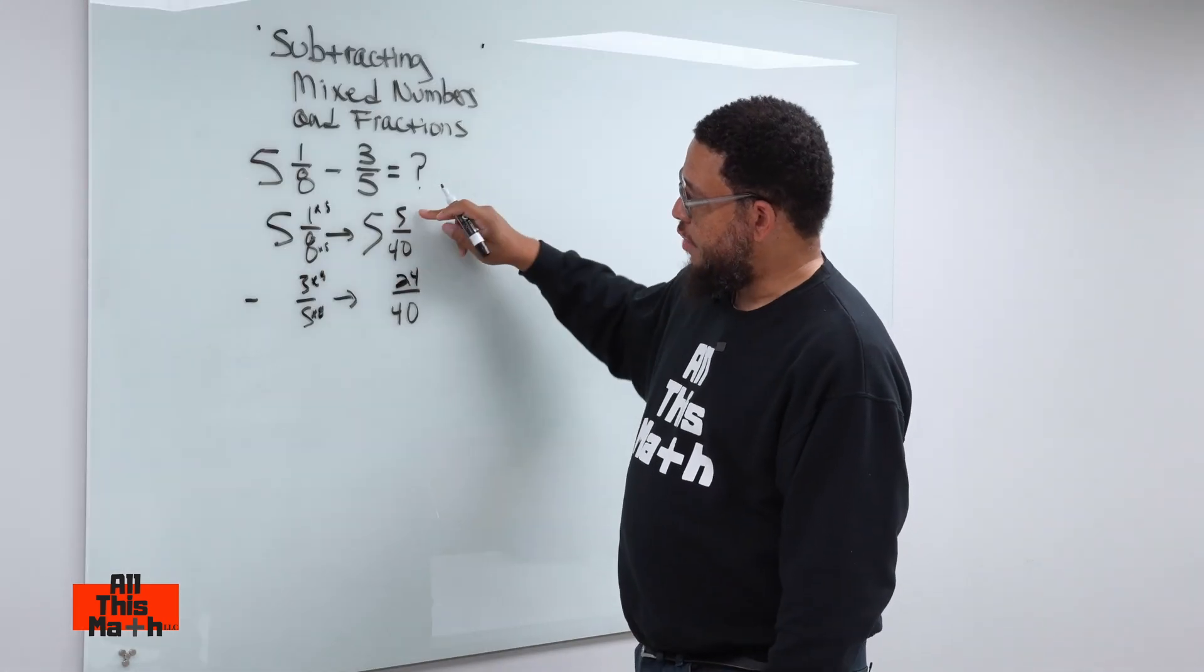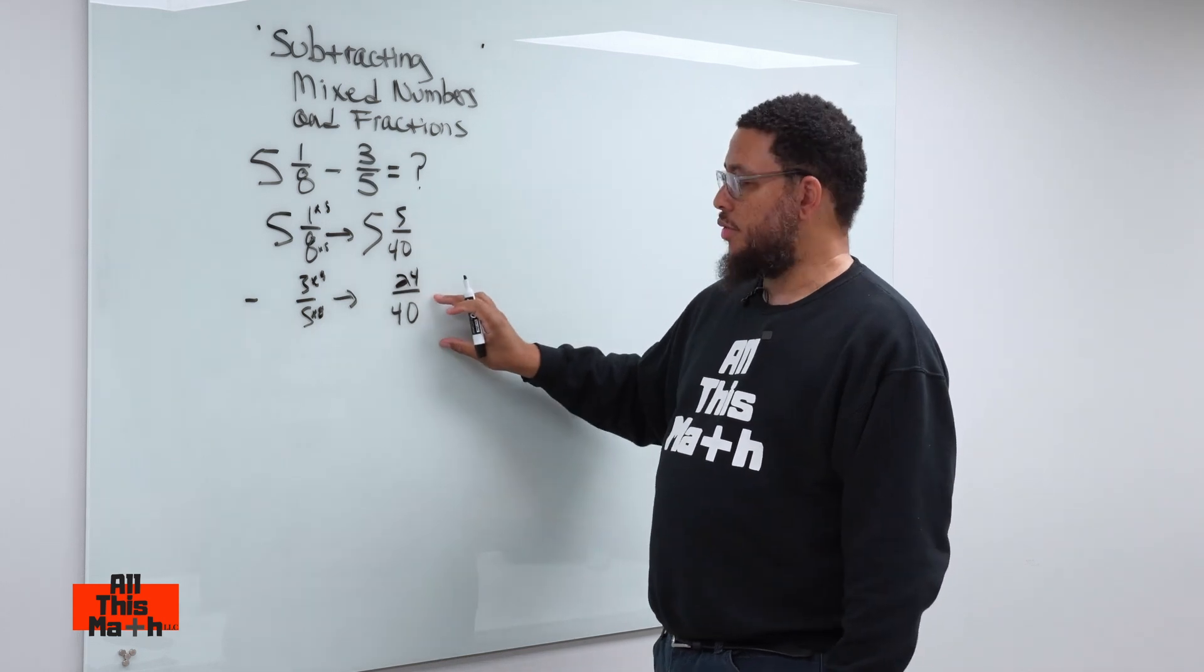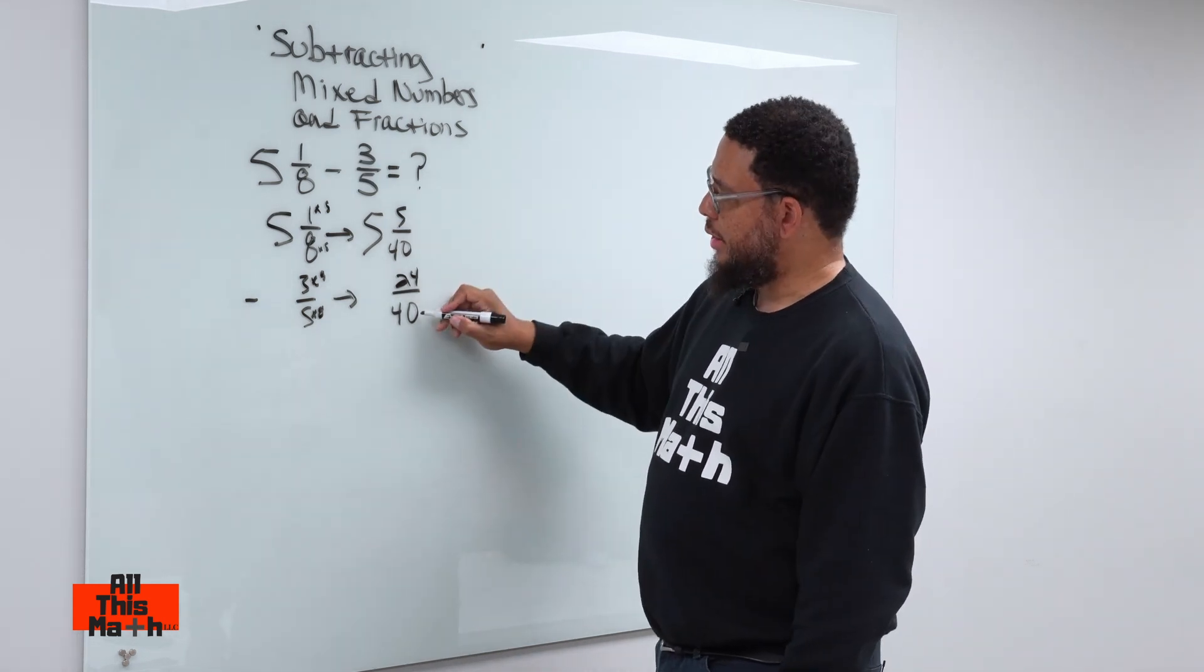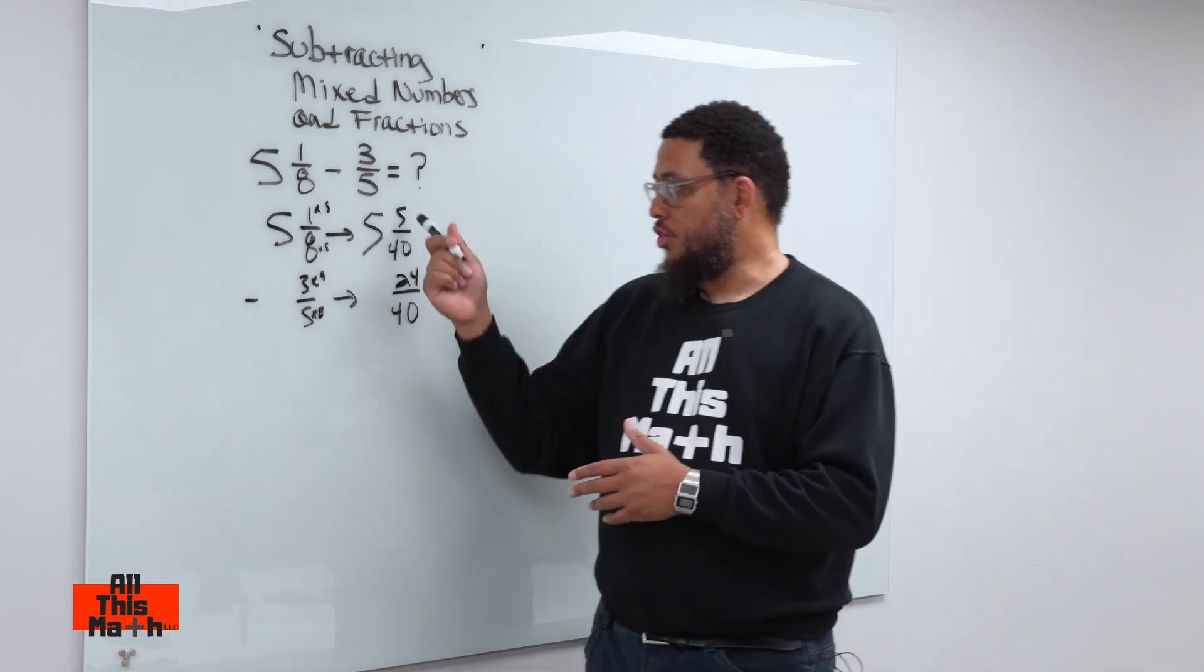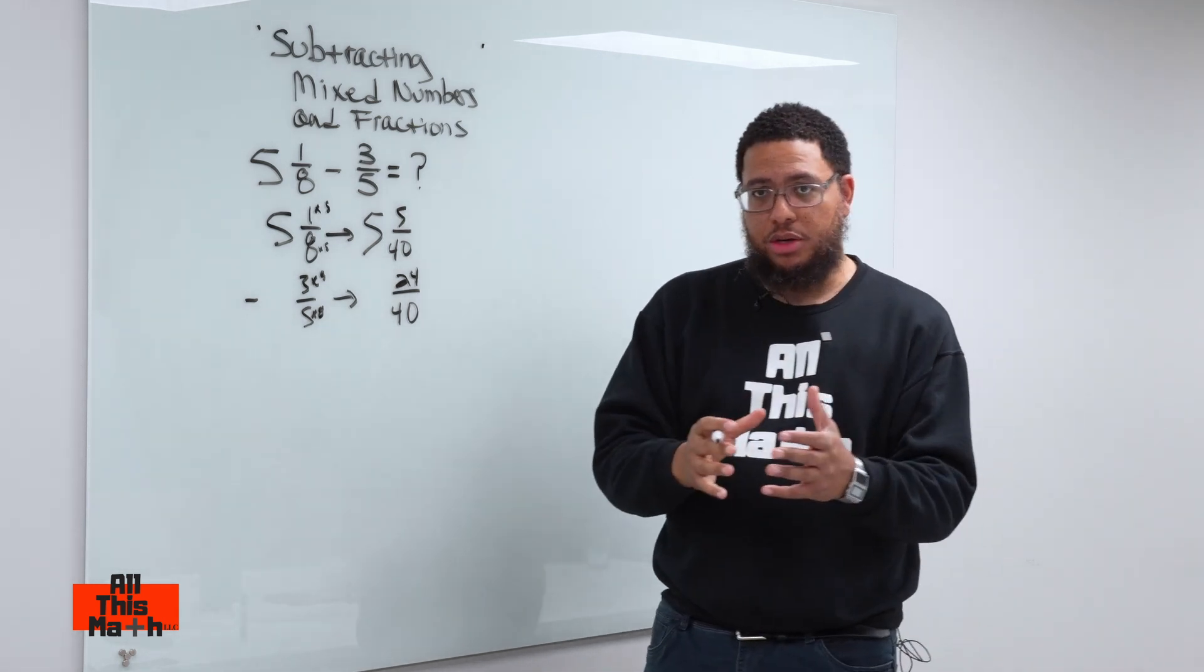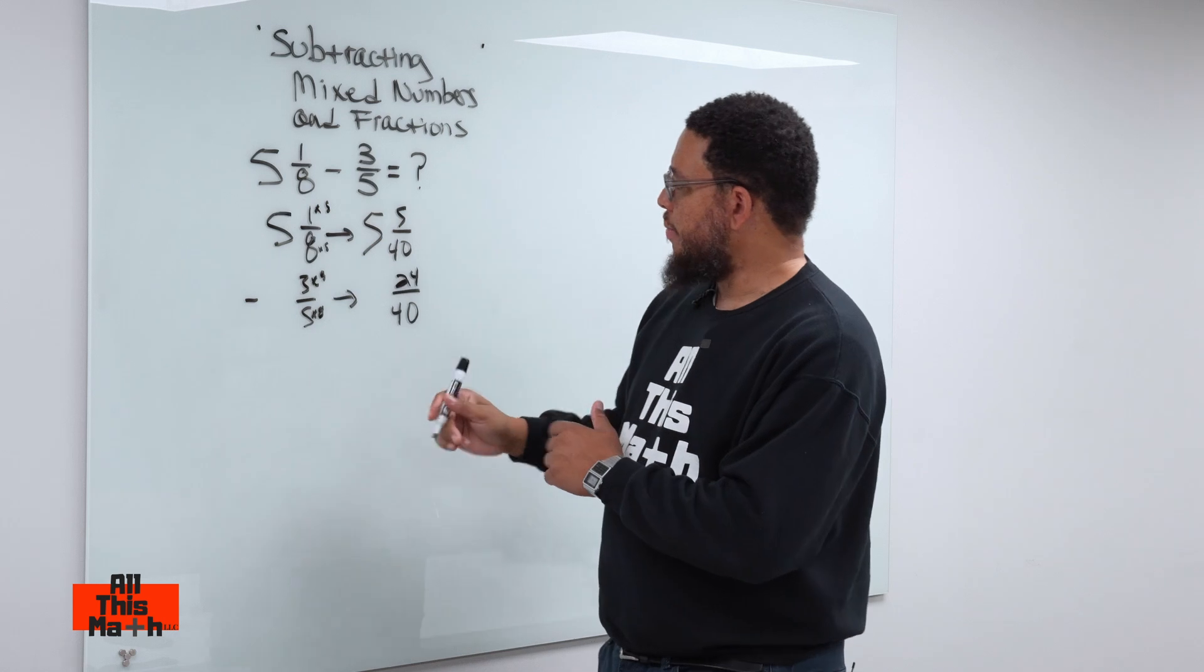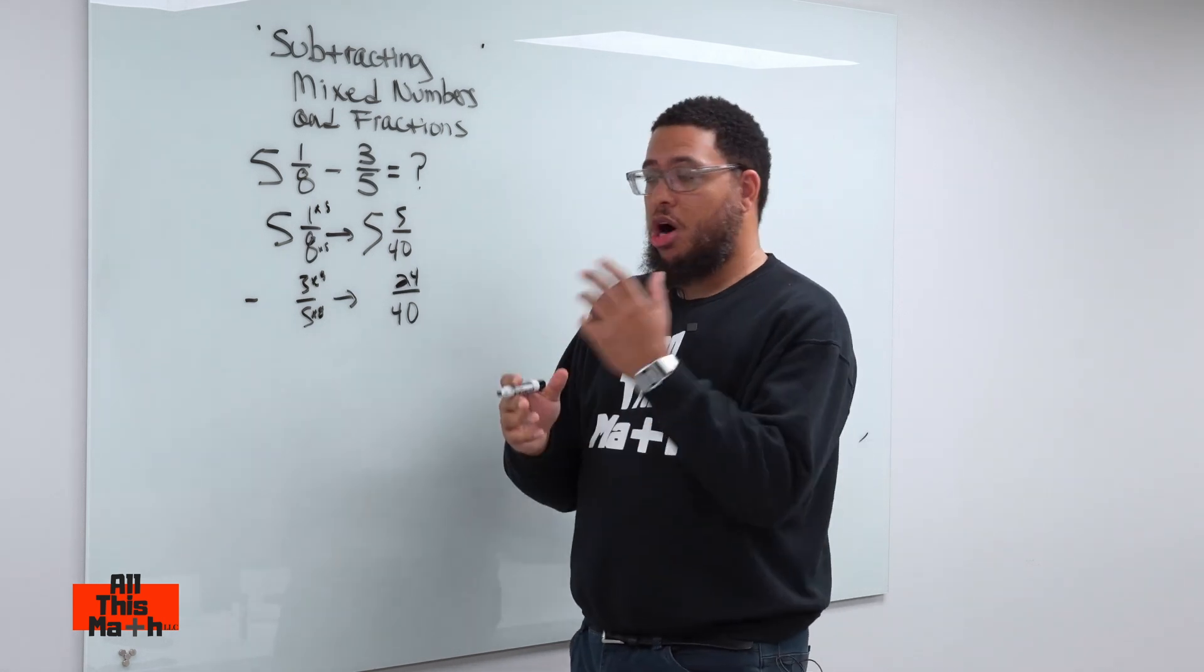Now, I got five and five fortieths minus 24 fortieths. That's a problem because even though my denominators are the same, using this method, we don't want to end up with negative values because five minus 24 would give us a negative value. So, what we're also going to have to do is borrow.